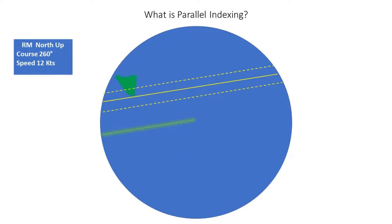When a vessel is being navigated in confined waters, traditional fixing methods become inadequate. It may take an experienced navigator a number of minutes to obtain a radar range, a visual bearing, then plot it on the chart and act on the information with a possible course change. If sea room is severely restricted and there are hazards to navigation in the area, such delays could lead to disaster.